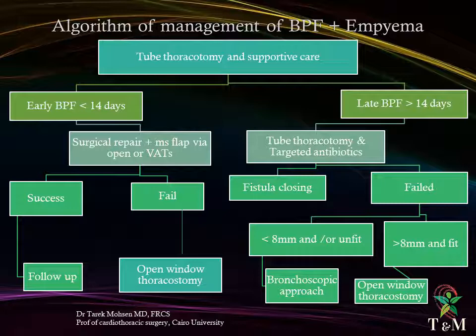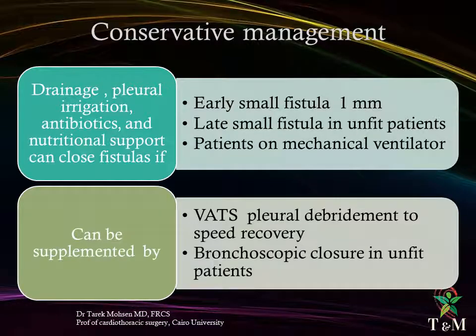For late bronchopleural fistula — more than 14 days — patients are usually frail and critically ill. Initial management is tube thoracostomy and targeted antibiotics, which by itself has shown success in spontaneous fistula closure. Should failure occur, re-evaluation of fistula size is important. For fistulas 8 millimeters or less, or in unfit patients, a bronchoscopic approach is used. For fistulas greater than 8 millimeters in fit patients, open window thoracostomy is utilized.